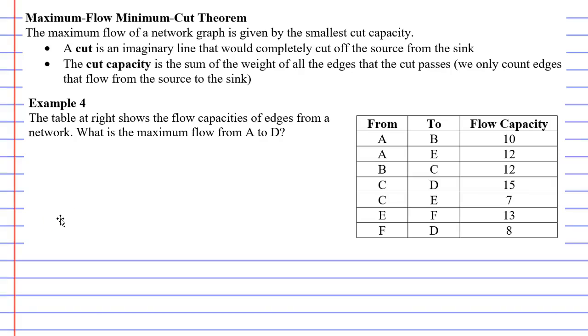In this video, we're going to complete example four. It says the table at right shows the flow capacities of edges from a network. What is the maximum flow from A to D?